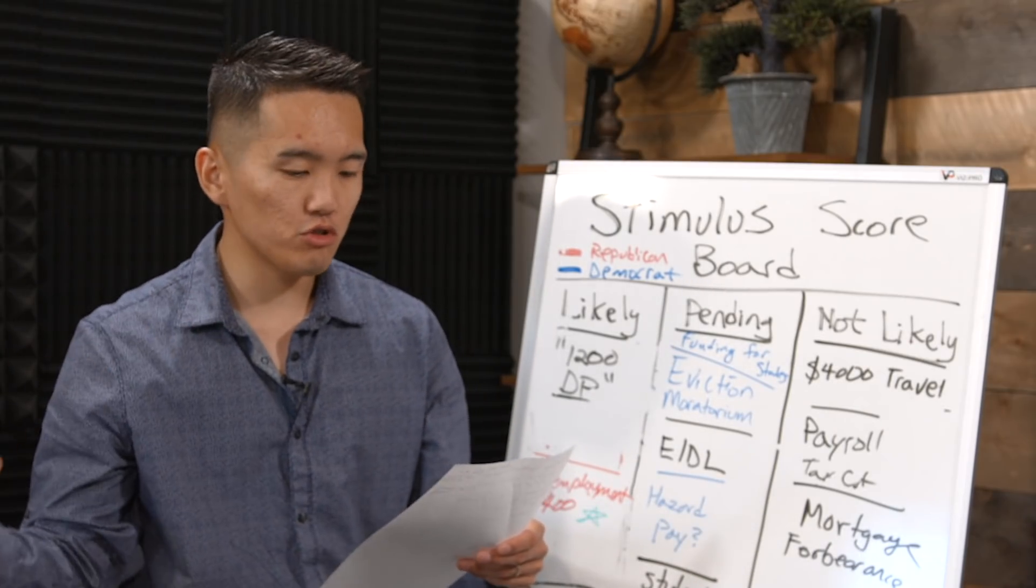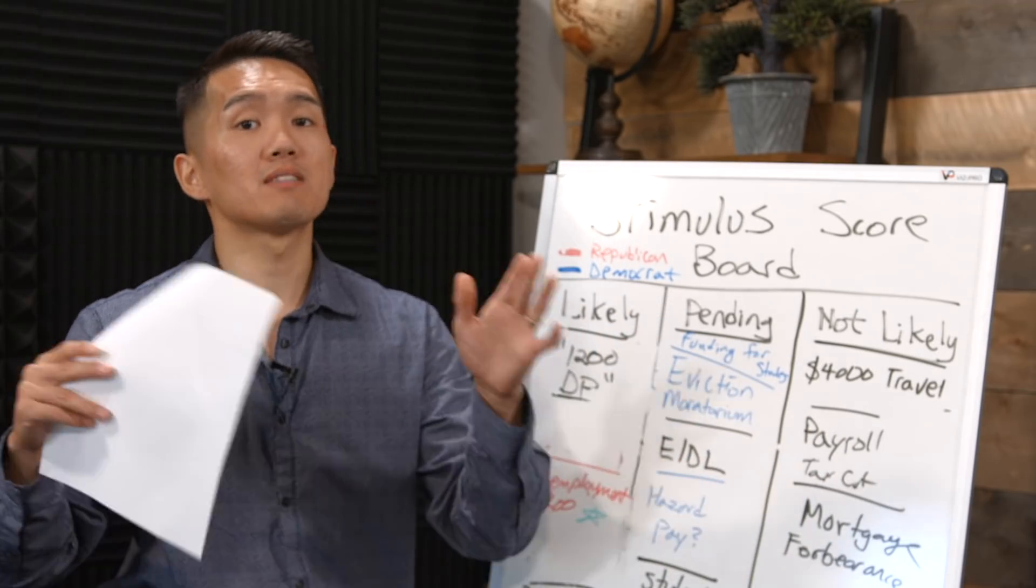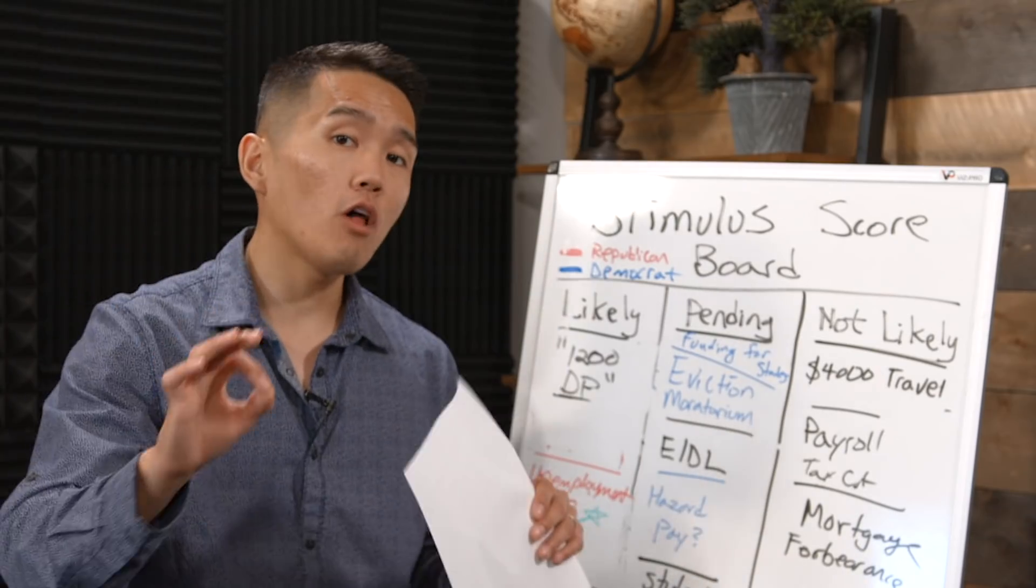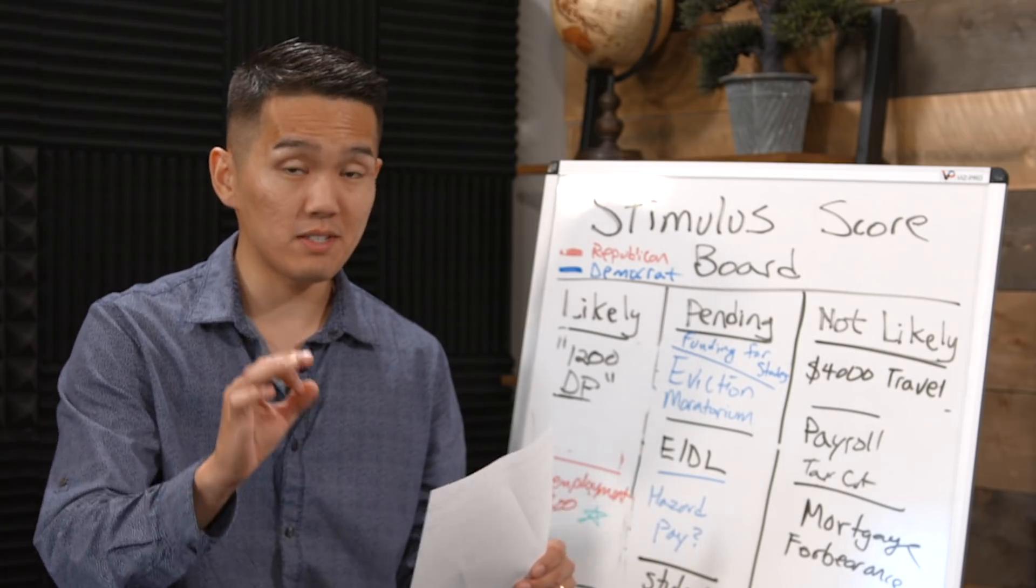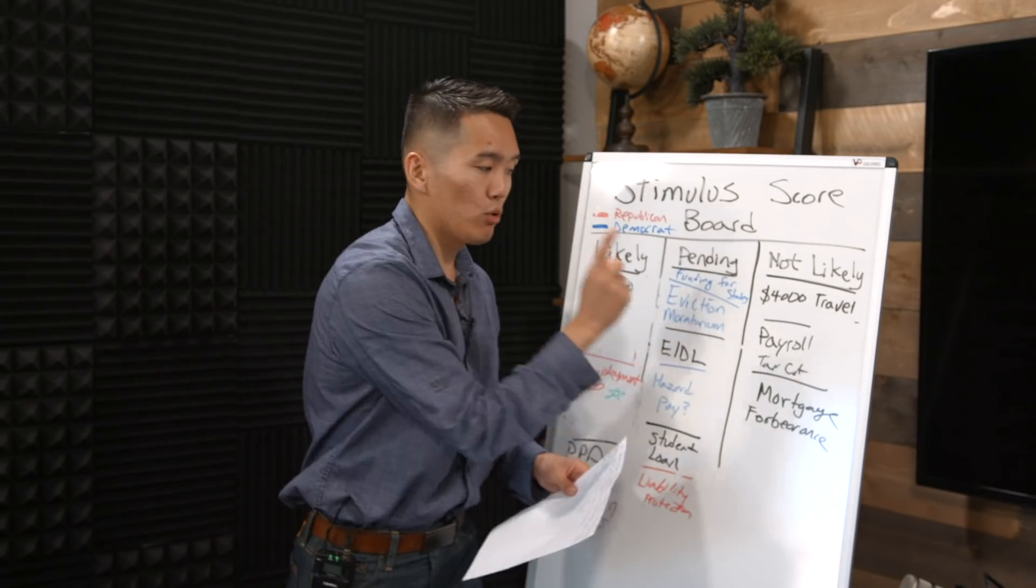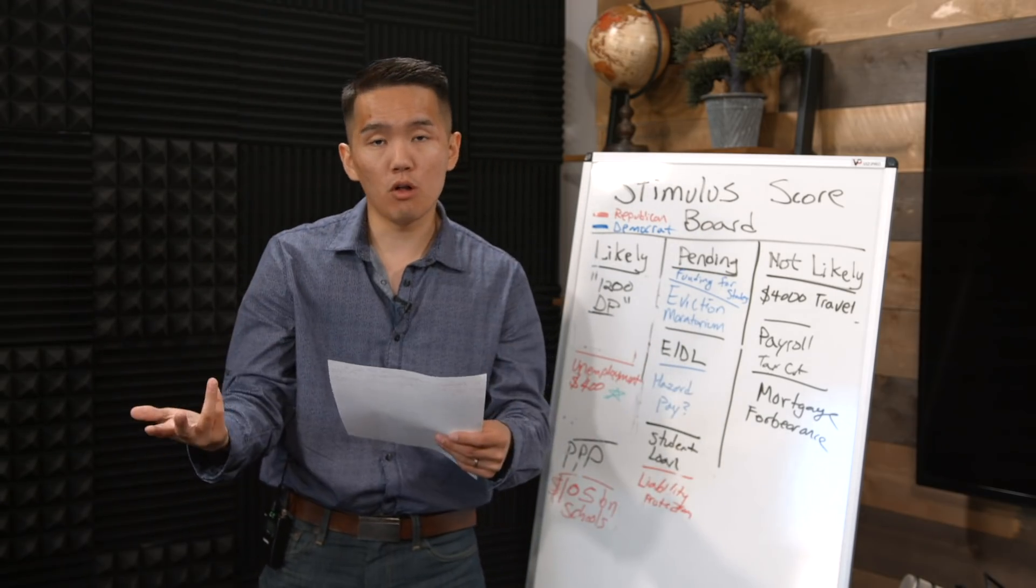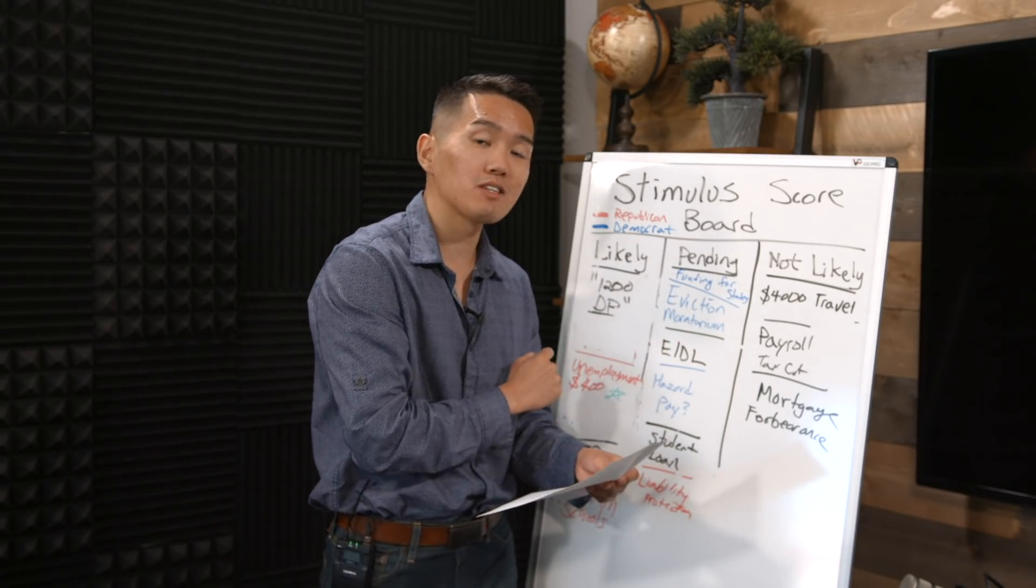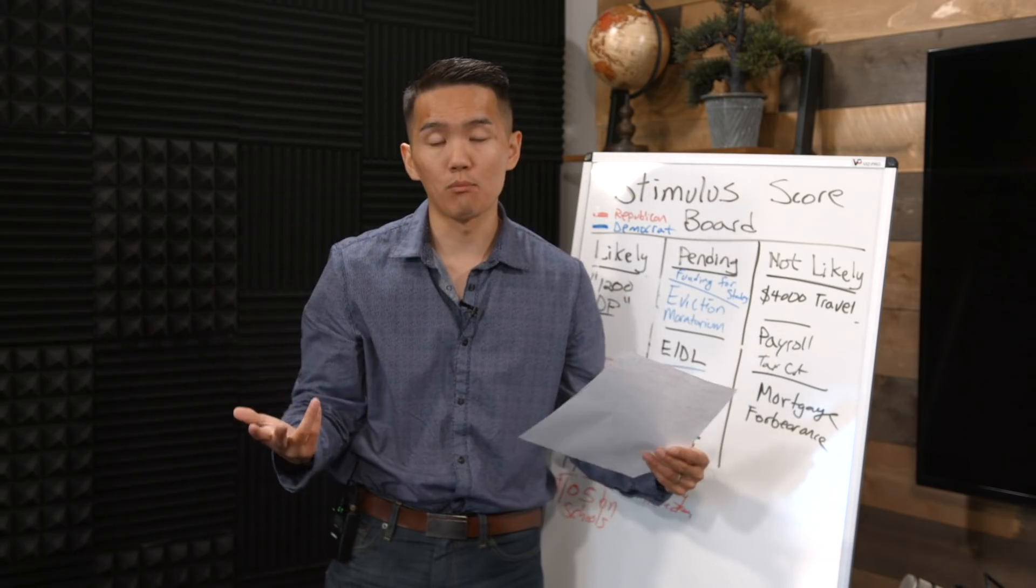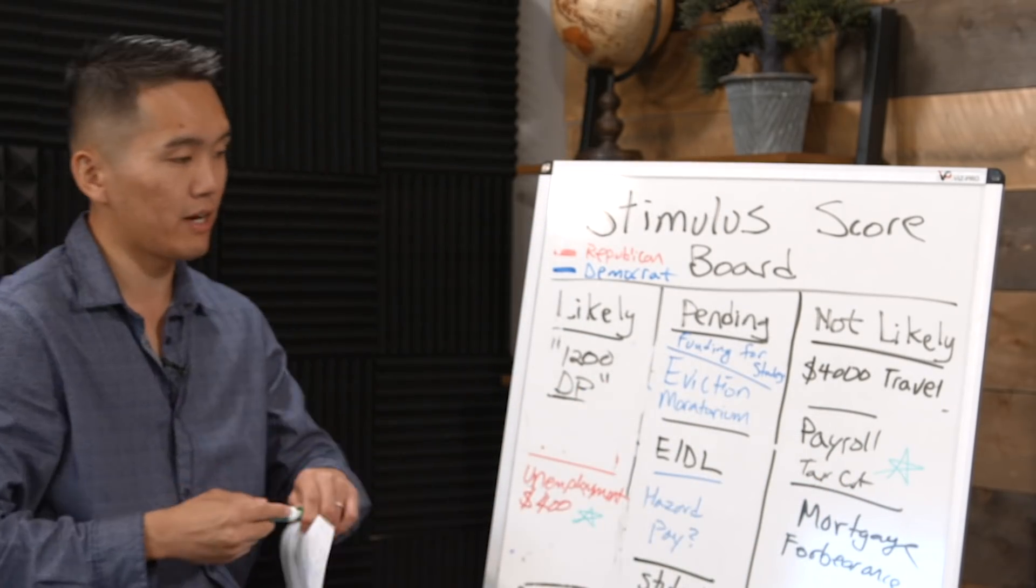Here's what it means for you as far as the payroll tax deferment goes. Starting September 1st through December 31st, 2020, every $100 that you make on your paycheck, you would earn about $7.50 more. Payroll tax is about 7.5 to 7.6%. The payroll tax cut is for individuals that are making $100,000 or less. If you make less than $100,000, the payroll tax deferment will be in effect for you, which means you get to keep more money as you earn your paycheck. We're going to add a green star to the payroll tax cut, because that is part of the executive order.